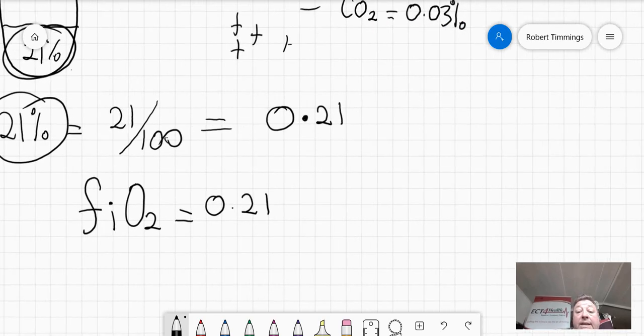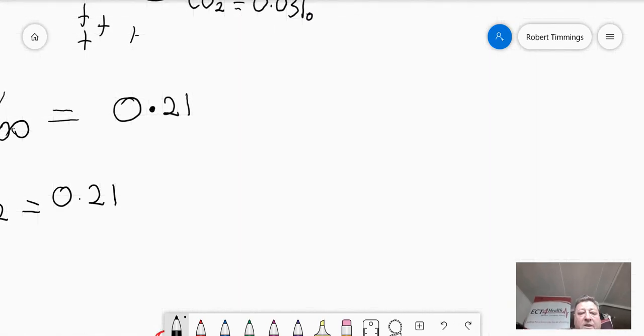Now let's give this one some clinical relevance. If my FiO2 was 0.21, 21%, 0.21, FiO2, room air.